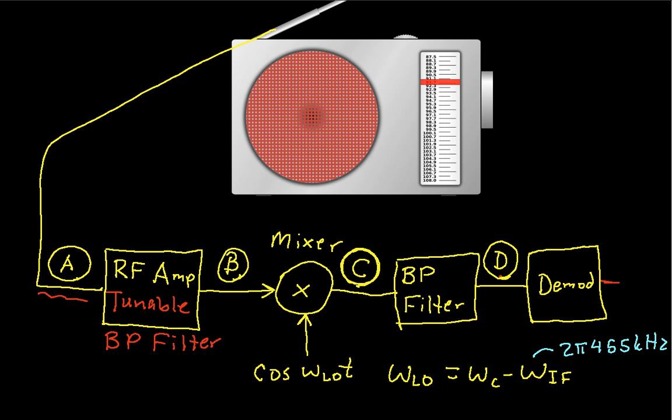So this pretty much wraps up the discussion of AM modulation. Again, we've been moving things all over in the frequency domain. And that's how you understand what's going on in an AM radio is in the frequency domain.